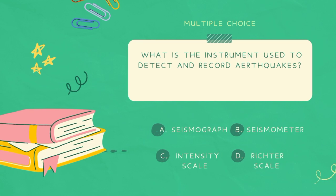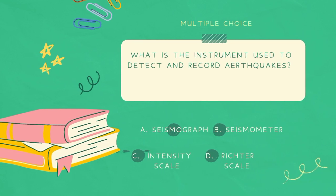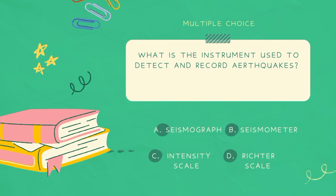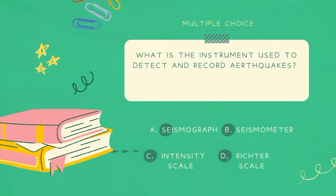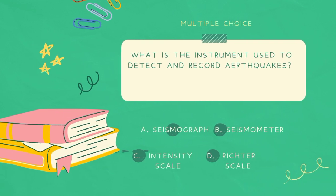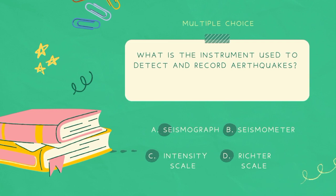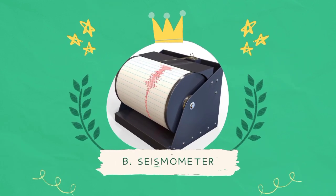What is the instrument used to detect and record earthquakes? A. Seismograph. B. Seismometer. C. Intensity scale. D. Richter scale. The answer is B. Seismometer.